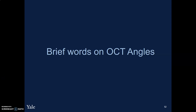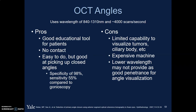A couple of words about OCT angles. This uses a slightly different wavelength and does about 4,000 scans per second. It generates very nice pictures that can be good educational tools, especially when talking with patients — easy to show them the narrowing of the angles and point out structures, as well as show the after-effects after a laser iridotomy. It doesn't require any physical contact, unlike a UBM, and is generally more pleasant for patients. It is pretty good at picking up closed angles: specificity has been found to be about 98%, sensitivity lower at 55%, especially compared to gonioscopy. So it doesn't replace gonioscopy, but can be used in adjunct.